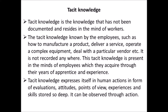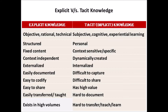Tacit knowledge is objective, rational, and technical, in that it can be observed through action. Second point, Explicit Knowledge is Structured, whereas Tacit Knowledge is Personal. Third point, Explicit Knowledge is Fixed Content, whereas Tacit Knowledge is Context Sensitive or Specific. Fourth point, Explicit Knowledge is Context Independent, whereas Tacit Knowledge is Dynamically Created. Fifth point, Explicit Knowledge is Externalized, whereas Tacit Knowledge is Internalized.